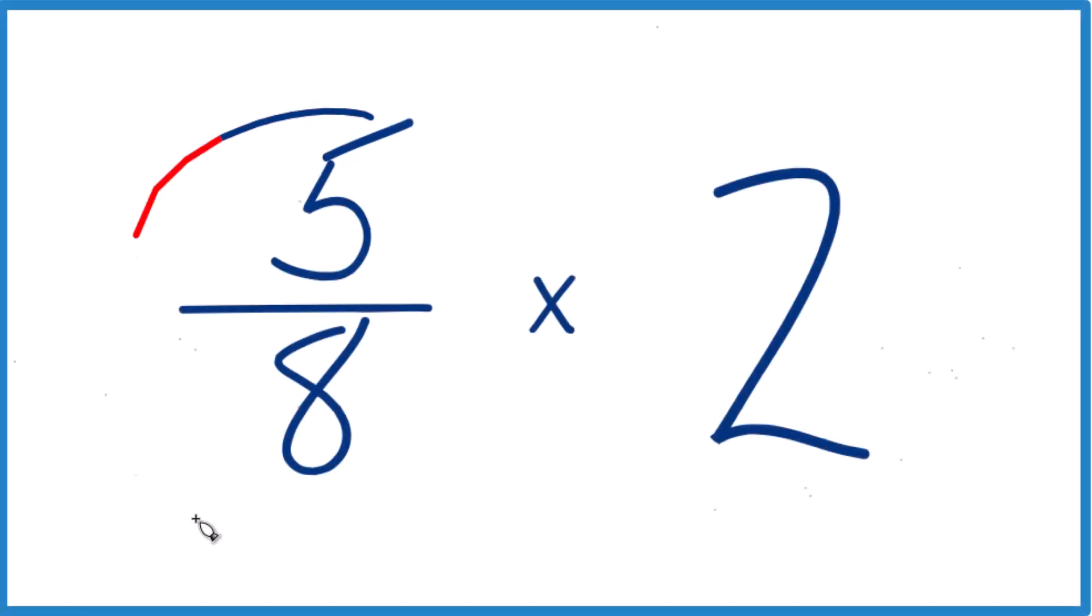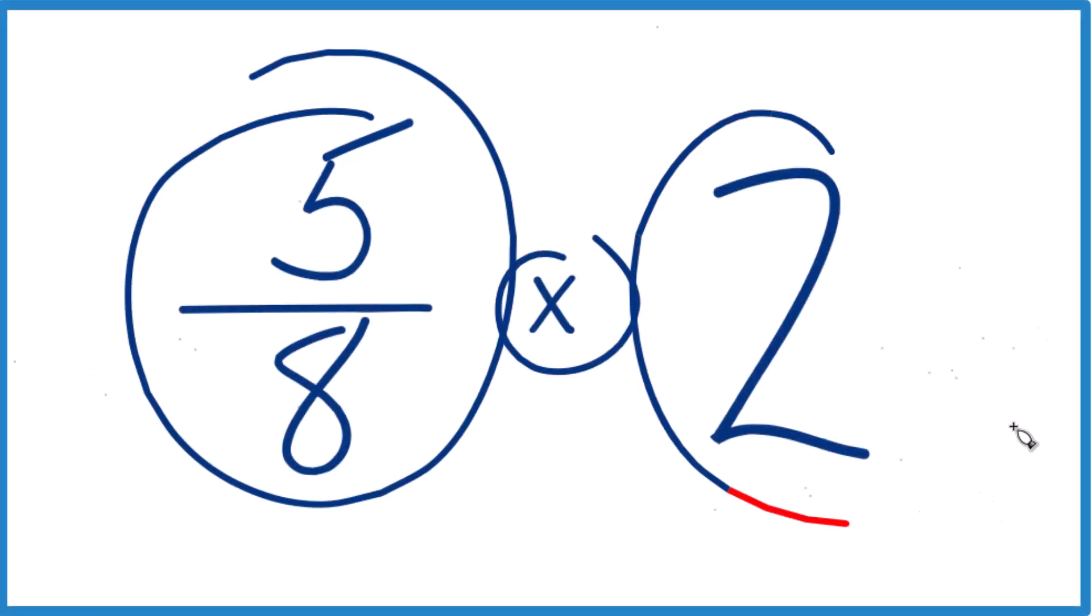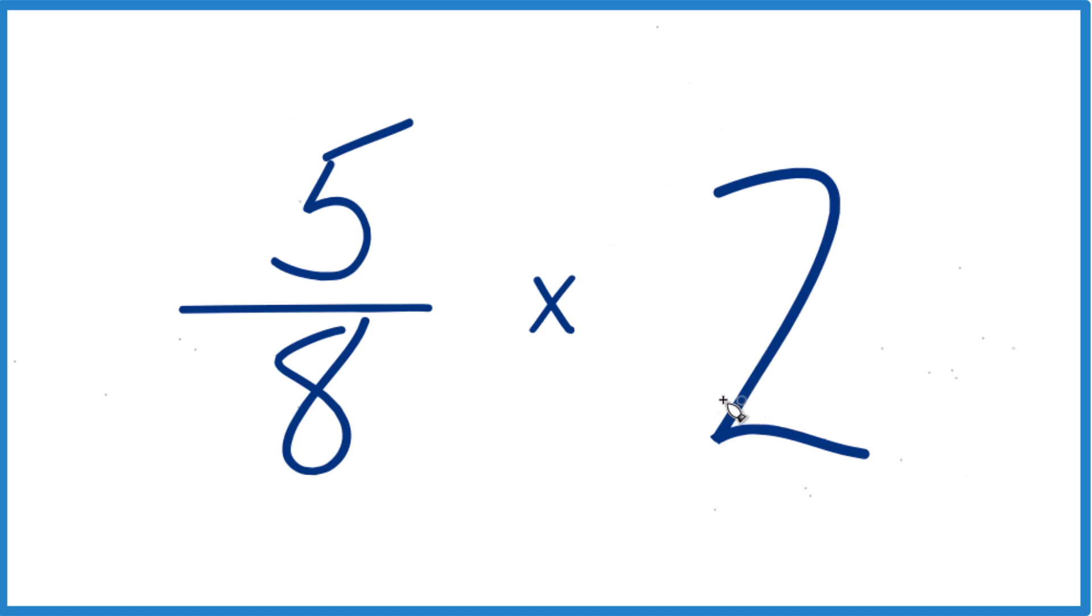If you need to multiply 5 eighths times 2, here's how you do it. So first off, 5 eighths times 2, which is just 2 times 5 eighths. So you could say 5 eighths plus 5 eighths. That's one way to do it.